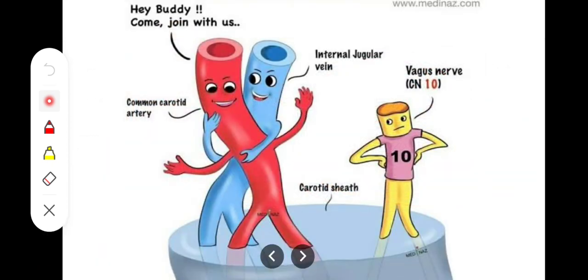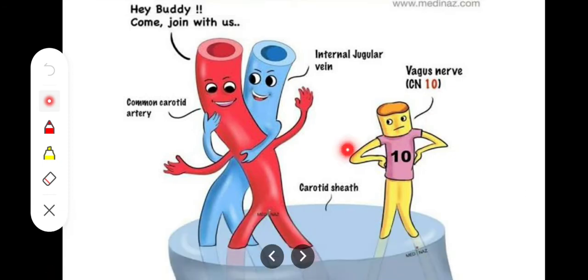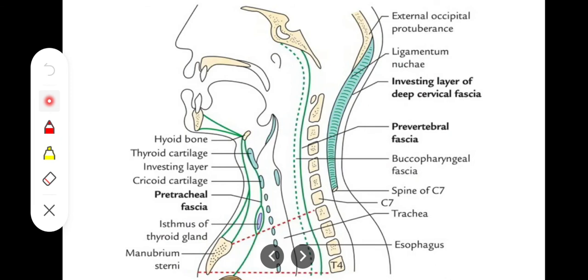To summarize, the medial-most structure is the internal carotid artery, the lateral one is the internal jugular vein, and posteriorly between them is the vagus nerve. That completes our discussion of the carotid sheath. Now we move on to the other layers of deep cervical fascia.